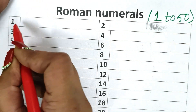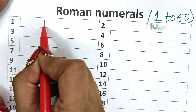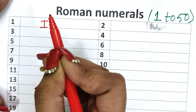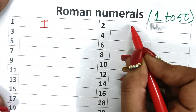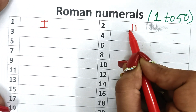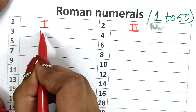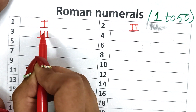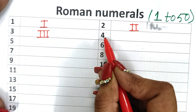So 1 is written like this: I. Okay, 1, 2, 3, 4.